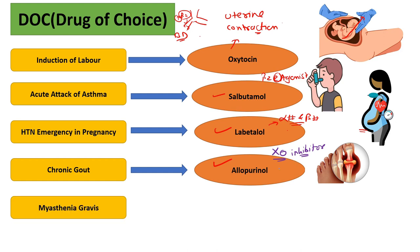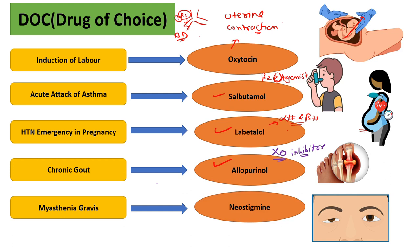The drug of choice for myasthenia gravis is neostigmine. Myasthenia gravis is an autoimmune disease characterized by weakness in skeletal muscles. Due to this, the muscles are not able to perform their work properly, so we give the patient neostigmine as the drug of choice.